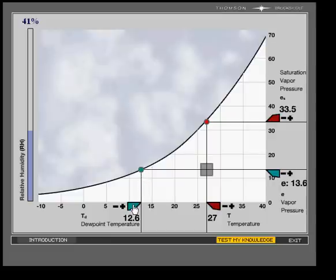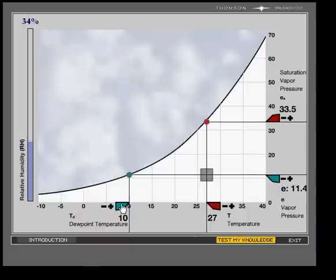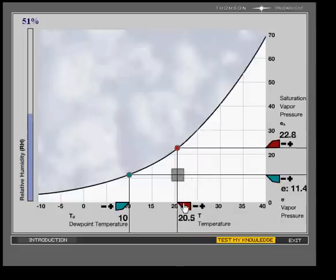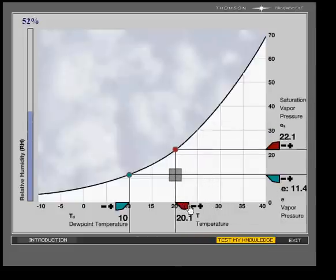So for any dew point temperature, we can find the actual vapor pressure here in millibars. And likewise, for any air temperature, say normal room temperature of 20 degrees C, we can find the saturation vapor pressure.